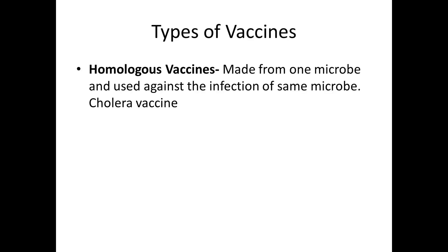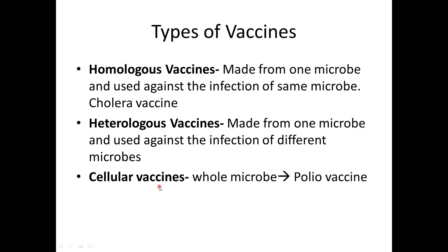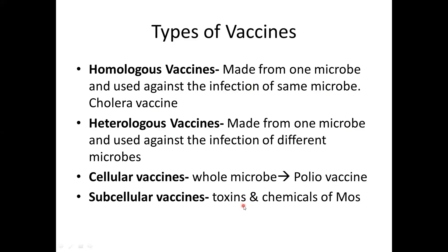The first type is the homologous vaccine, which is made from one microbe and used against infection by the same microbe — for example, the cholera vaccine. Next is the heterologous vaccine, made from one microbe but used against infections caused by different microbes. Then cellular vaccines make use of whole microbes, for example the polio vaccine. Subcellular vaccines use toxins and chemicals of microorganisms.